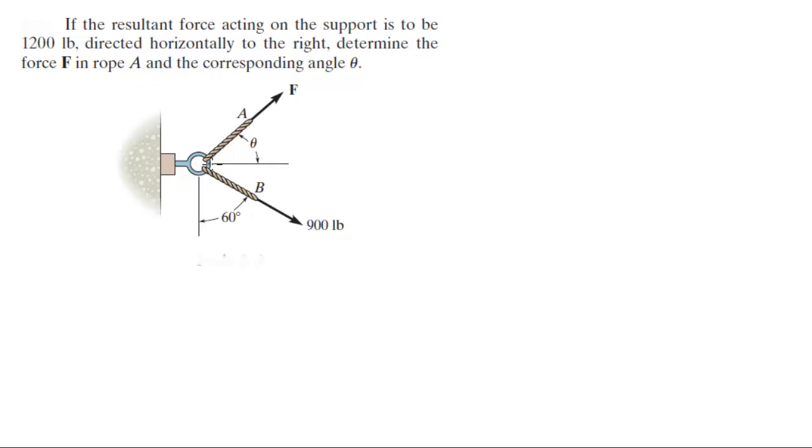Basically what they are telling you is that if the resultant force is horizontally to the right at 1200 pounds, you want to build a triangle and move these right here and this will be F.